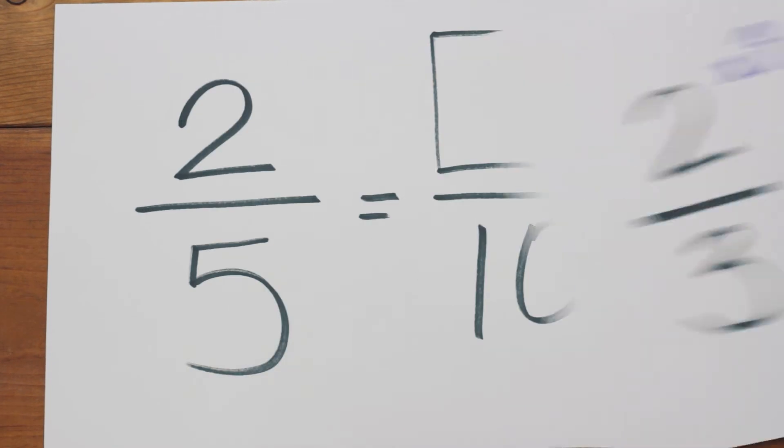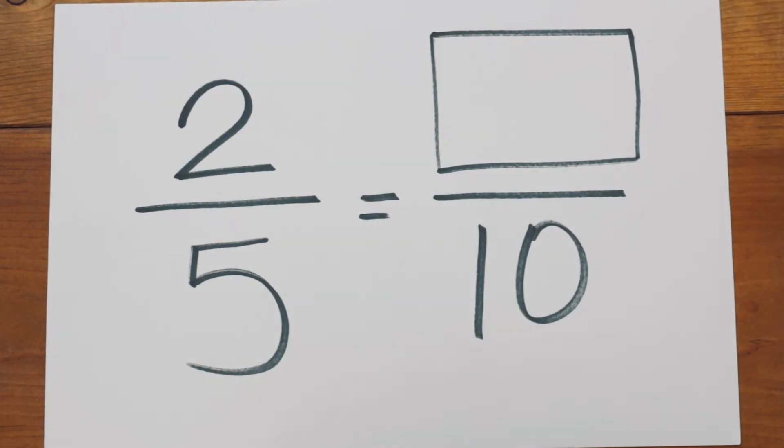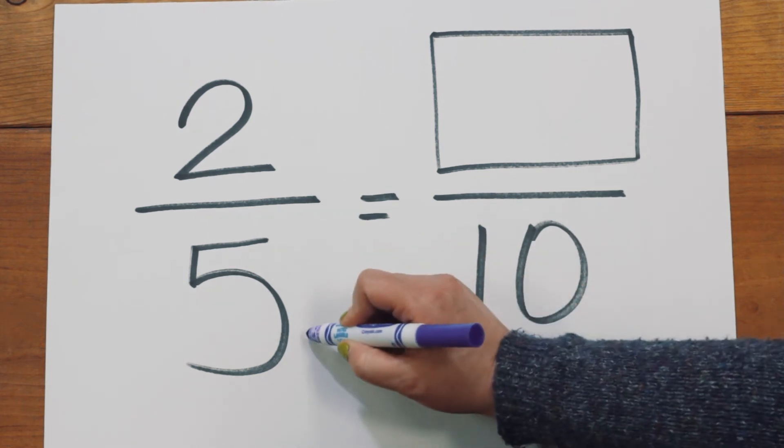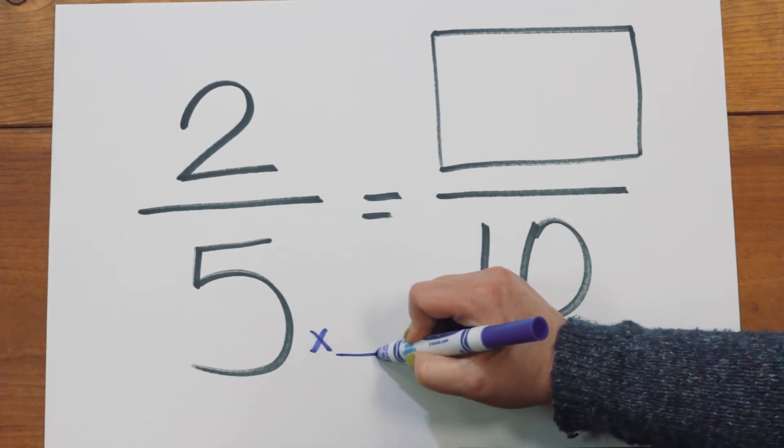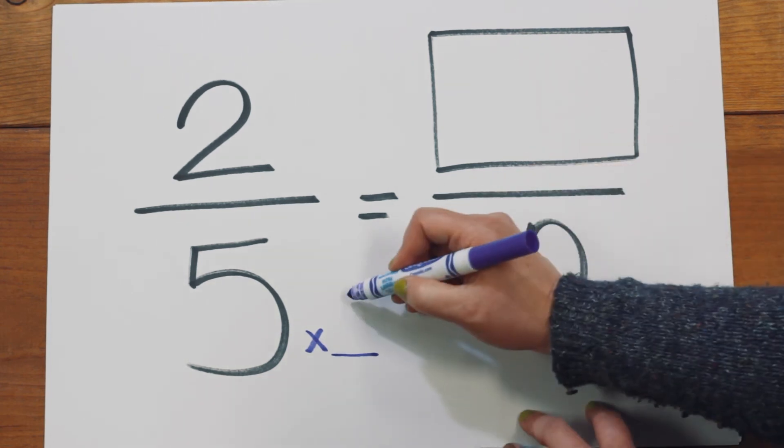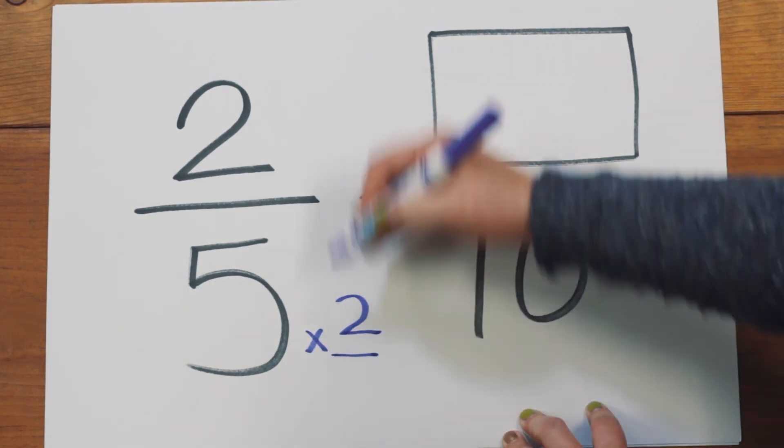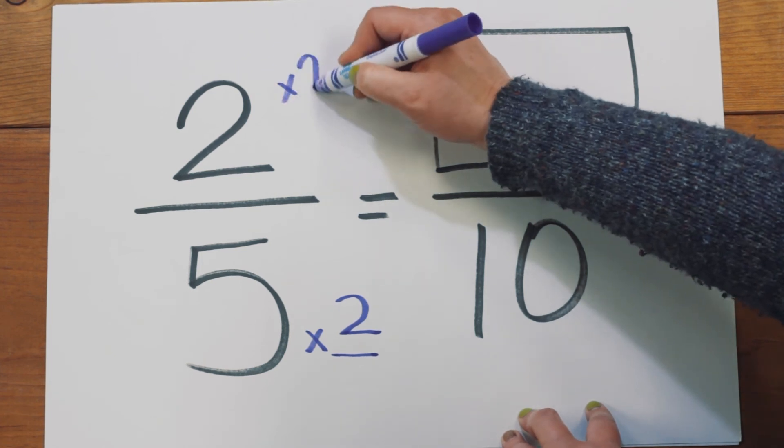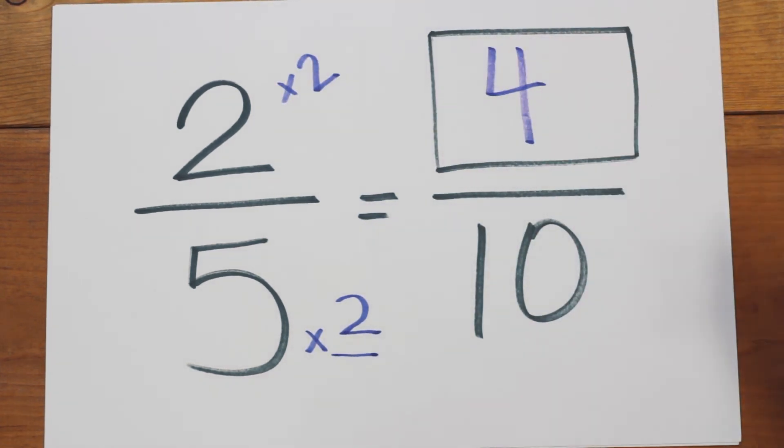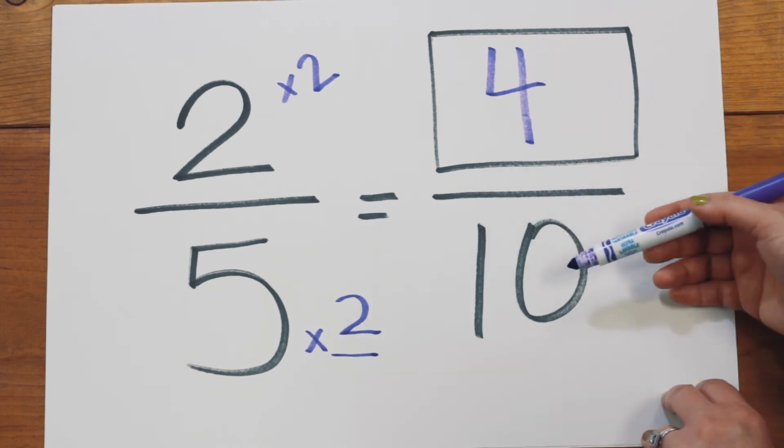Let's play again. New one. Whatever I do to the bottom, I do to the top. So five times what gives me ten? I'm going to say two. And whatever I do to the bottom, I do to the top. Two times two is four. And my equivalent fraction would be four tenths.